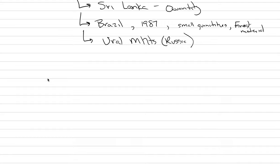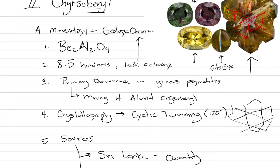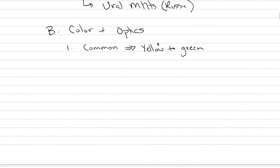Now for our color and our optics. Common chrysoberyl that doesn't show any phenomenon is yellow to green. The green tends to be kind of a yellowish green. These are not the most popular for adornment, and that's one reason why you haven't heard about chrysoberyl - it's not as popular of a color.